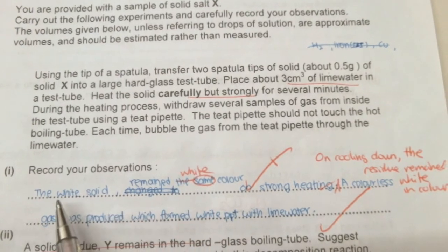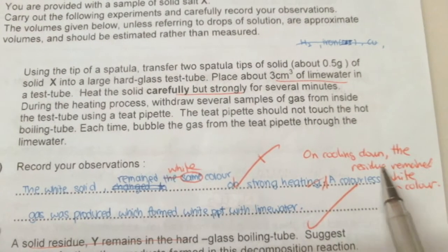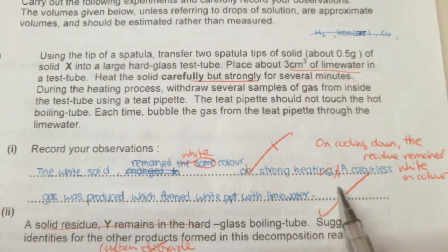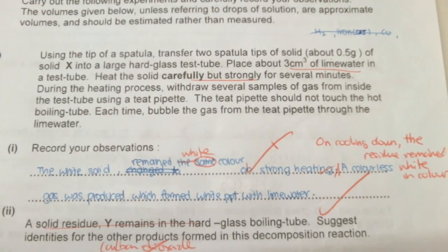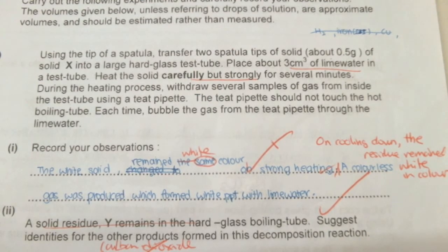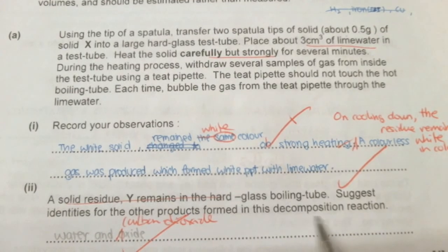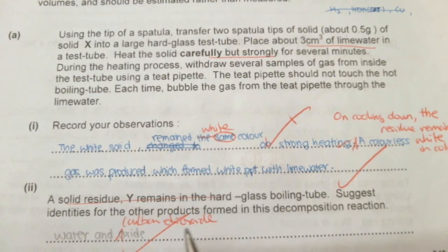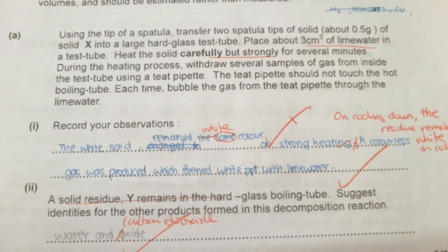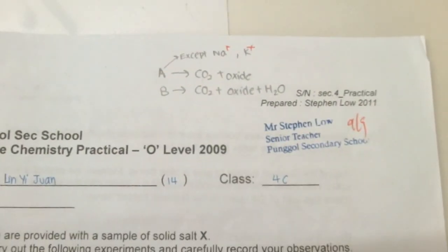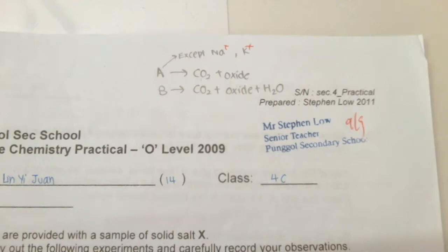The correct observations are as follows: on heating, the residue remains white in color, and a colorless gas is produced. The gas turns lime water milky, which shows that the substance is a carbonate or a bicarbonate. There is no brown gas and no oxygen gas produced, so it cannot be a nitrate. You can suggest the products are carbon dioxide, and also water — you may notice condensation during the experiment. The other product is an oxide.